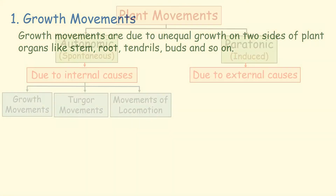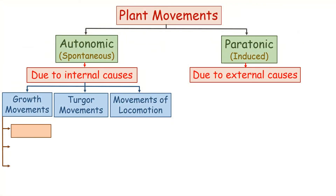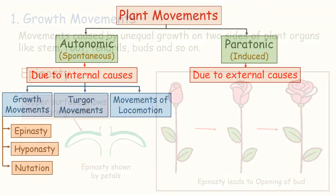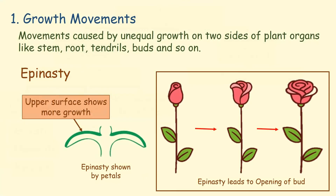Three types of growth movements are epinasty, hyponasty, and nutation. Epinasty is shown by leaves and petals. If the upper surface area of the leaf in the bud condition shows more growth compared to the lower surface area, this leads to the opening of buds.